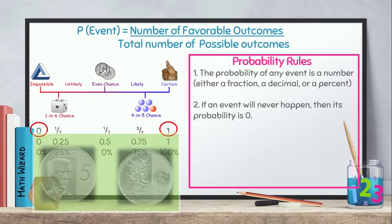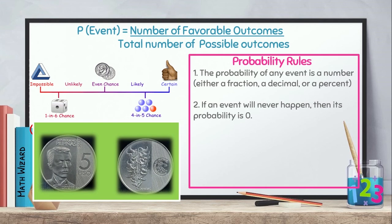Next naman, ano naman yung event chance? Para siyang flipping a coin. Kasi, dalawa lang yung option. It's either a head or a tail. Pag nag-flip ako ng coin, dalawa lang yung possible outcome. Kaya, even yung chance. Either a head or a tail.